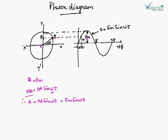E is equal to OA, same as this. As OA is equal to EM, so E is equal to EM sin omega t.